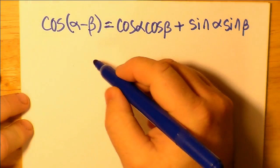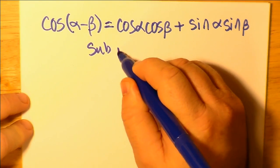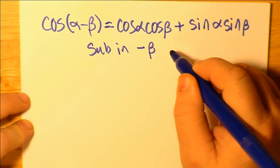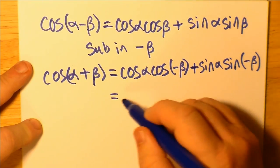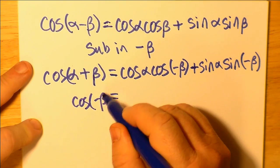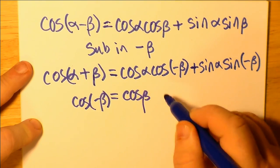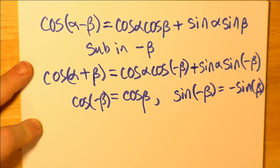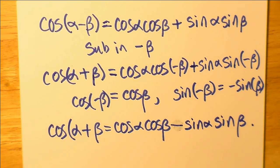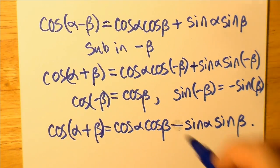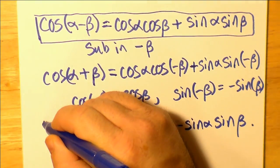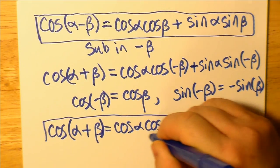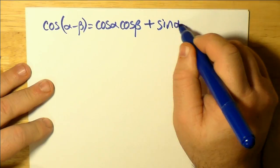Today we're going to talk about some of the things that come out of the compound angle formulas. We'll start with cos(α − β) and substitute in negative β, which changes it to cos(α + β). cos(α) · cos(−β) gives cos(α)cos(β) because cosine is an even function, and sine(−β) is negative sine(β) because sine is an odd function. So the only thing that changes is that the plus sign between the two terms turns into a minus sign.